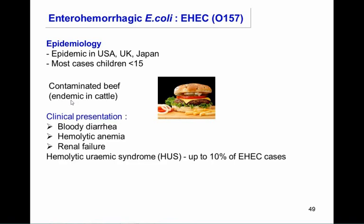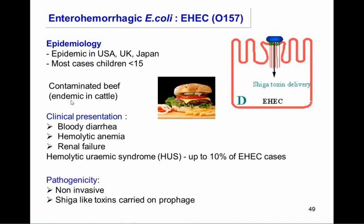HUS is caused by Shiga toxin expressed by EHEC. E. coli bind to enterocytes using the same intimin system as EPEC, then secrete Shiga toxin, which kills enterocyte cells, causing bloody diarrhea. The toxin enters the blood — there is no bacteremia but there is circulating toxin — causing hemolysis of erythrocytes and severe damage to kidney cells. Up to 10% of cases develop HUS, and treatment is very limited; plasma exchange can be attempted.